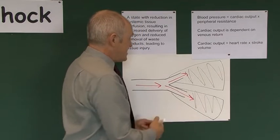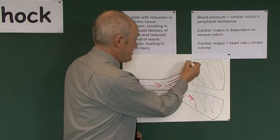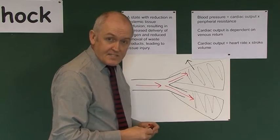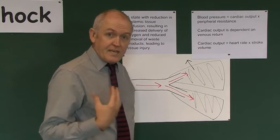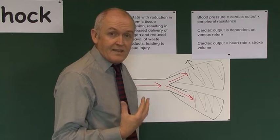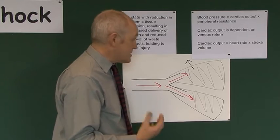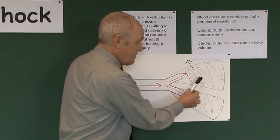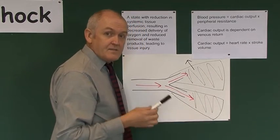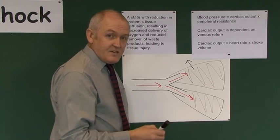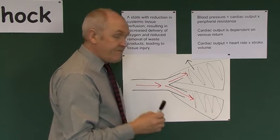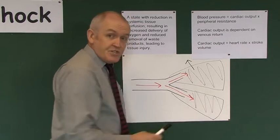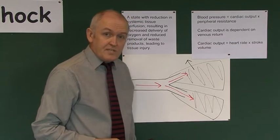The acidosis will start coming out of the tissue to some extent, and in established cases of shock that will cause a systemic acidosis. Initially the tissues are going to be hypoxic and acidotic, and eventually that will result in damage to these tissues.